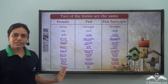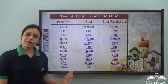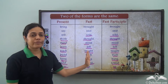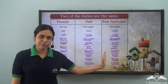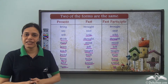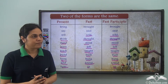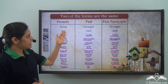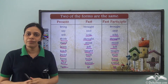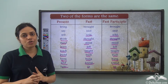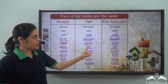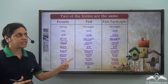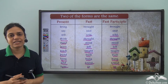As you can see, these are all irregular verbs because they do not form their past and past participle forms by adding d, ed, or ied — the word itself changes. So bring — brought — brought, and so on. In these verbs, the past and the past participle forms are the same but different from the present form.